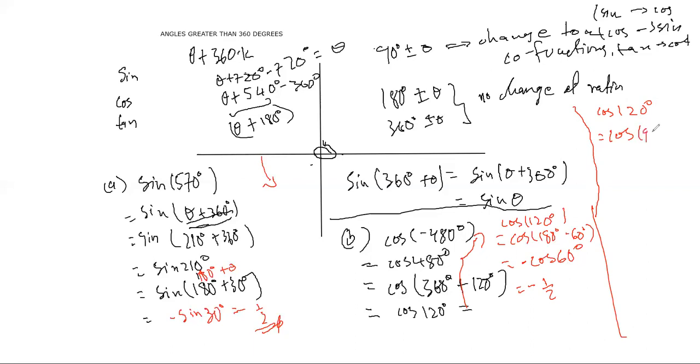Alternatively, you could have gone ahead and said, well, cosine 120 is actually the same as cosine of 90 plus 30. Now this is a 90 reduction, so that means cosine will change to sine. So first of all, I must change to sine, and cosine is negative in the second quadrant.